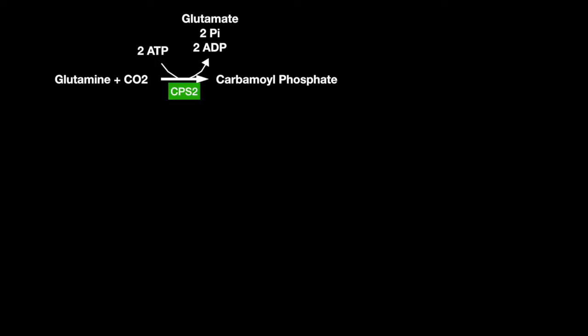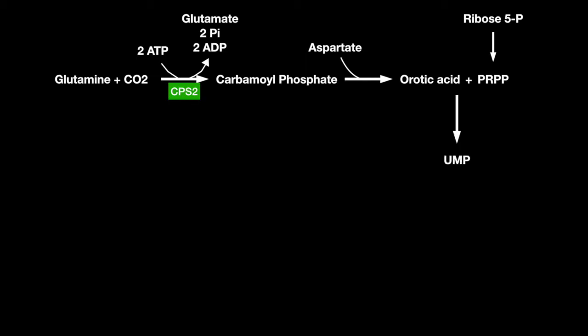Glutamine combines with CO2, with energy from two ATPs, to produce carbamoyl phosphate by the enzyme CPS2. Carbamoyl phosphate combines with aspartate to produce orotic acid. Ribose-5-phosphate from the pentose phosphate pathway gets converted into PRPP, where it combines with orotic acid to produce uridine monophosphate by UMP synthase.